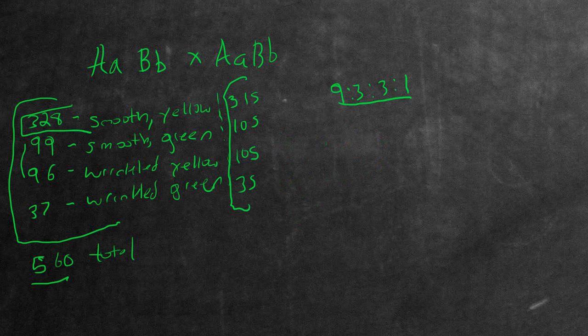Now we're going to check if the observed values, the ones we counted, are actually kind of matching up to the ratio of the expected using chi-squared statistics. So the next thing we want to do is figure out the difference between them. So we're going to do 328 subtract 315. That gives us a value of 13.